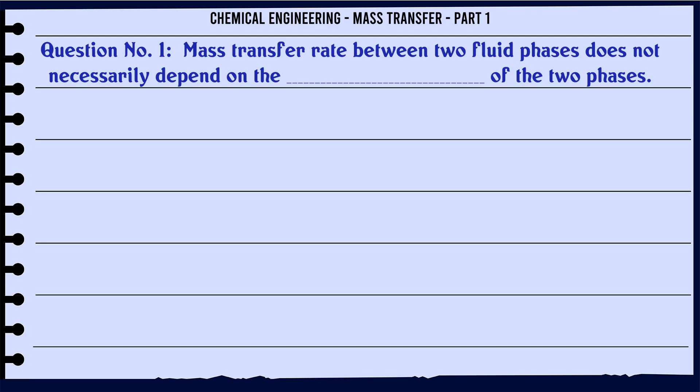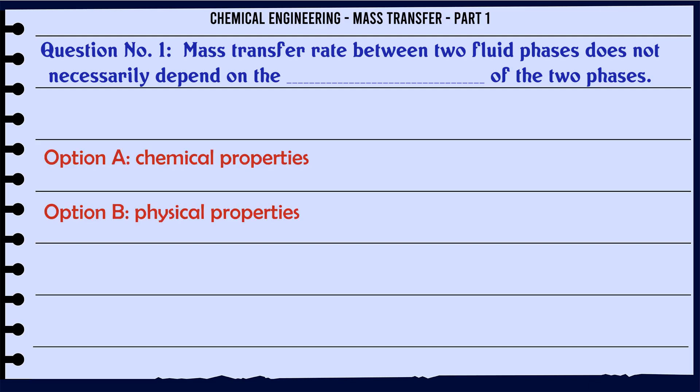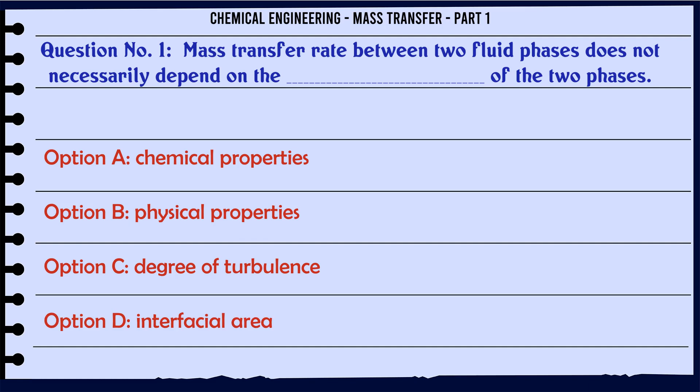Mass transfer rate between two fluid phases does not necessarily depend on the [properties] of the two phases. A. Chemical properties. B. Physical properties. C. Degree of turbulence. D. Interfacial area.